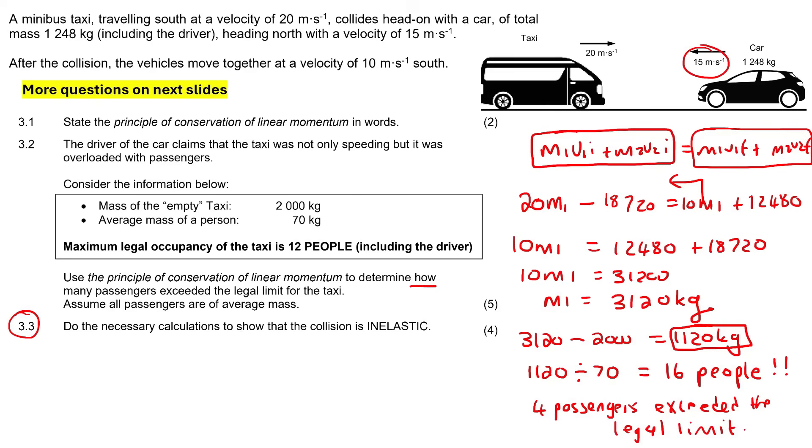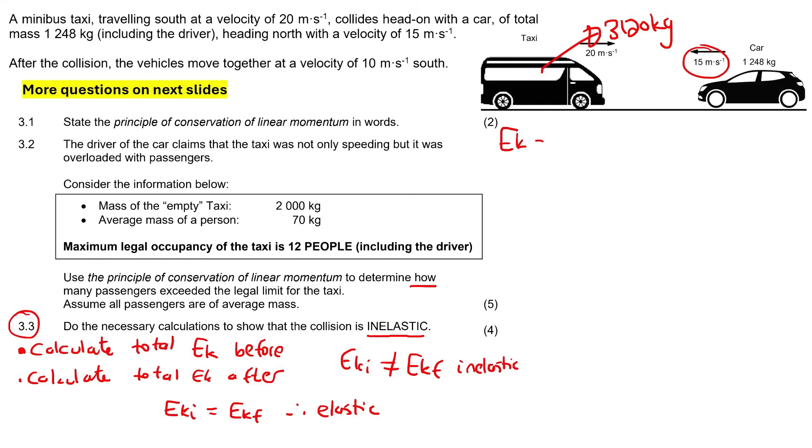Next question says, do the necessary calculations to show that the collision is inelastic. So let me quickly give you a quick summary of this again. Remember that when we look at inelastic and elastic, all we do is the following. First step is calculate total kinetic energy before and then calculate the total kinetic energy after. Then if the kinetic energy before, so the initial, is the same as the final, then we call it elastic. If they are not the same, then we call it inelastic. So remember that kinetic energy is half mv squared. So let's go work out the total kinetic energy of the system before the crash. And let's choose south as positive again.